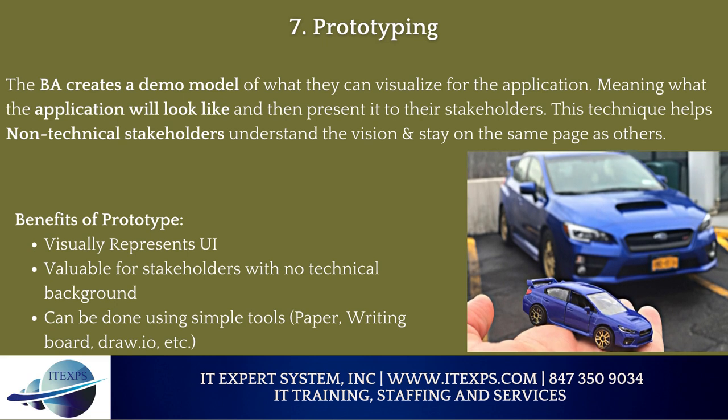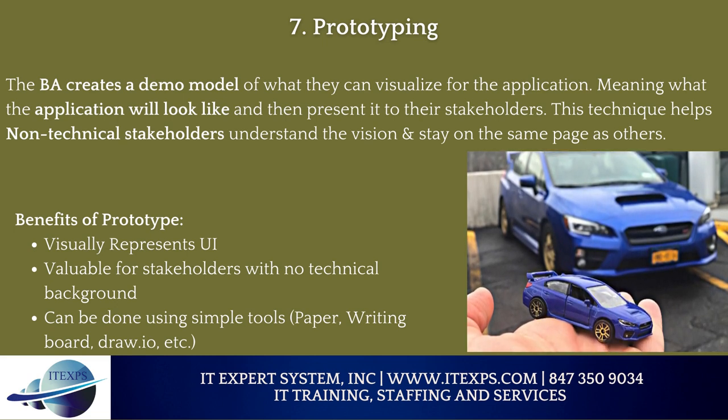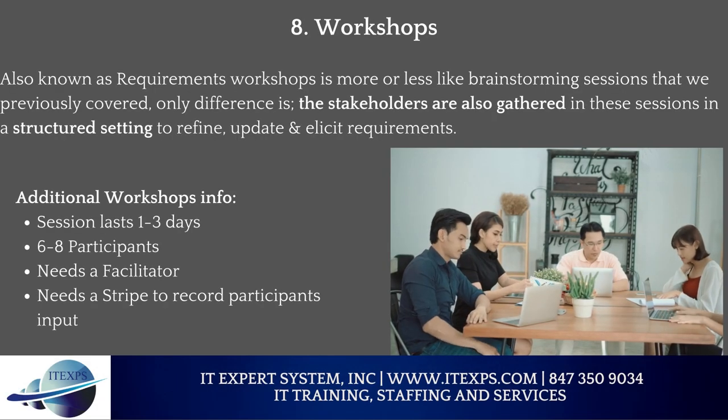Number 7: Prototype. Basically, the BA creates a demo model of what they can visualize for the application — what it will look like — and then presents it to stakeholders. This technique helps non-technical stakeholders understand the vision and stay on the same page. Benefits of prototyping: it visually represents the UI, it is valuable for stakeholders with no technical background, and it can be done using simple tools like paper, a whiteboard, draw.io, and others.